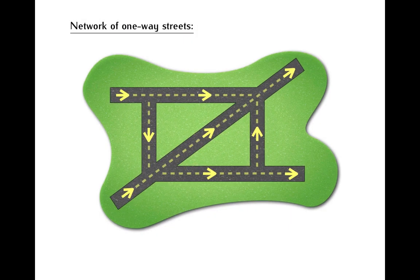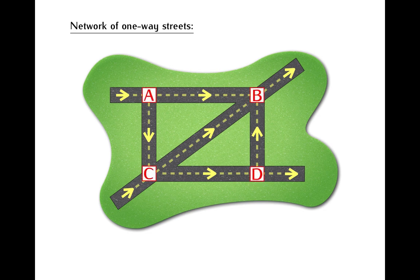Here we have a diagram that shows a small network of streets, and for simplicity I will assume that all these streets are one-way streets, and that the direction of traffic on each of them is indicated by these arrows. For reference, it will be also useful to name intersections in this network, so I will call them A, B, C and D.